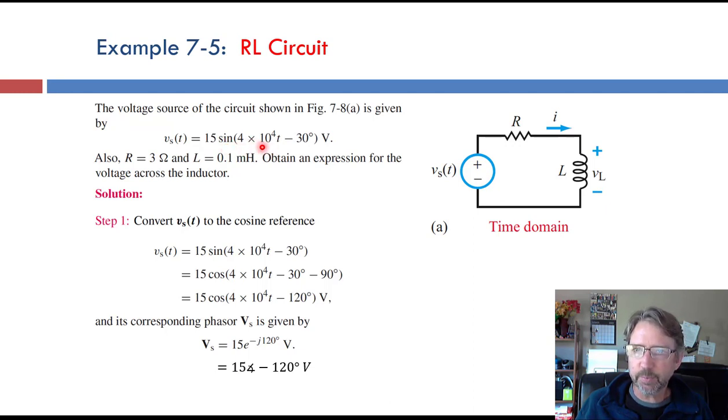that's our frequency in radians per second, omega, and a phase shift of minus 30 degrees. We have a 3 ohm resistor and a 0.1 millihenry inductor. And we're trying to find the voltage across the inductor VL.